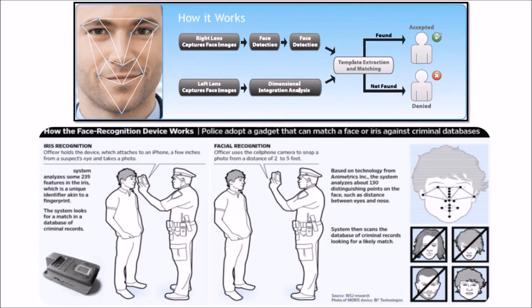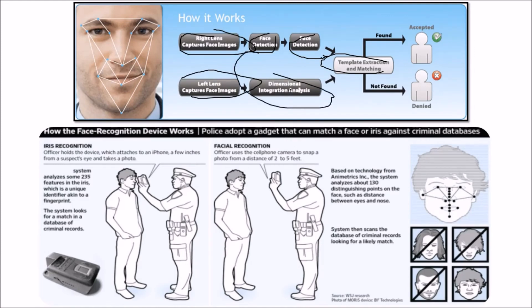The system maps the face and creates a face print — a unique numerical code for that face. Once a face print is stored, it can be compared to thousands or millions of face prints in the database. In practice, a right-lens and left-lens camera capture face images, face detection produces template extraction and matching, and a dimensional integration analysis accepts or rejects the match — for example, a police gadget can match a face or iris against a database.